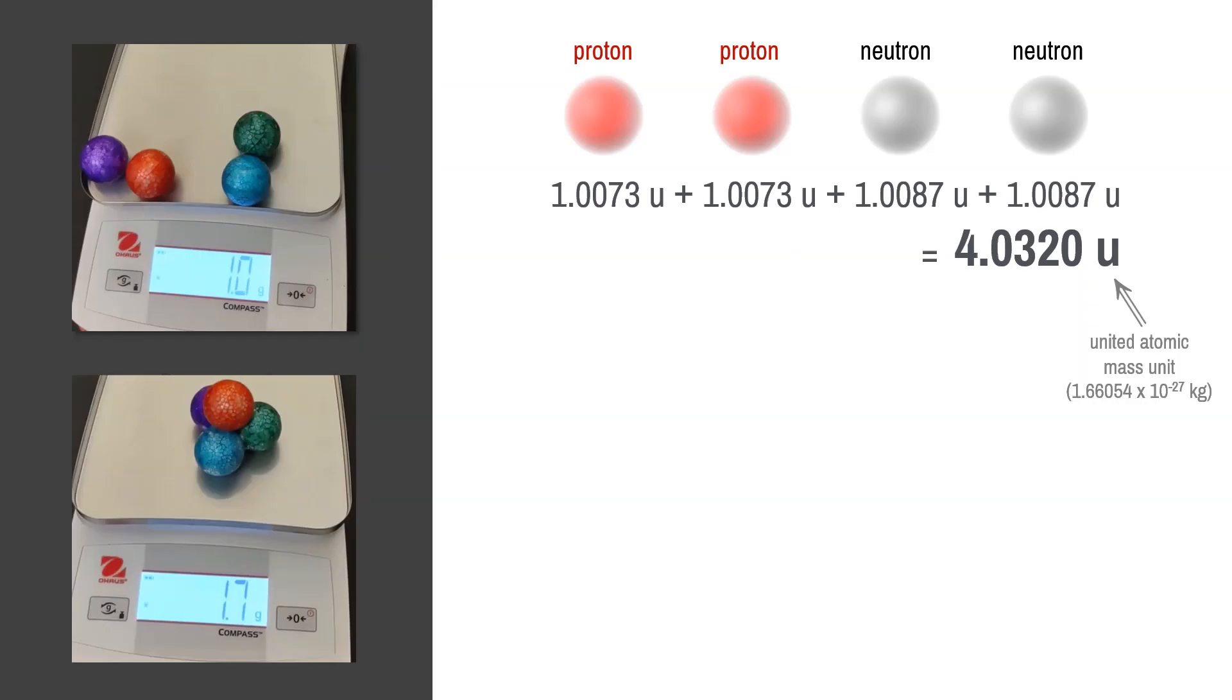But if we take two protons and two neutrons, measure their combined mass, then fuse them together to form a helium nucleus, the final mass is smaller.